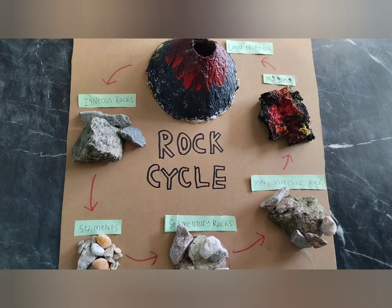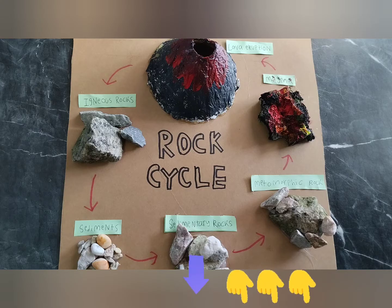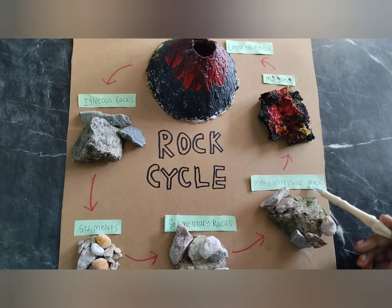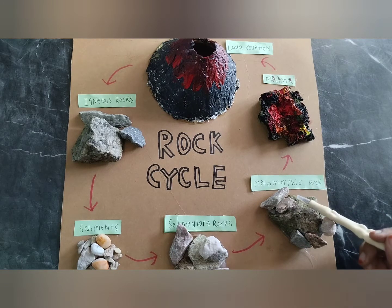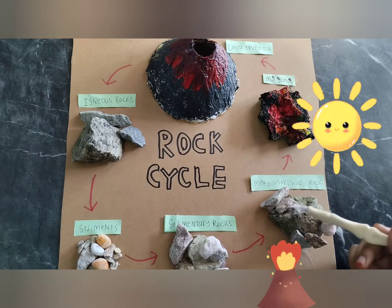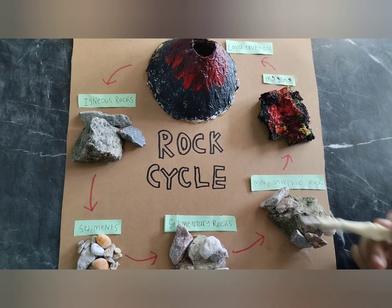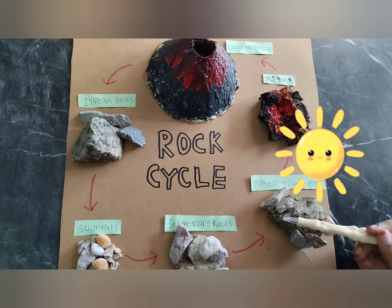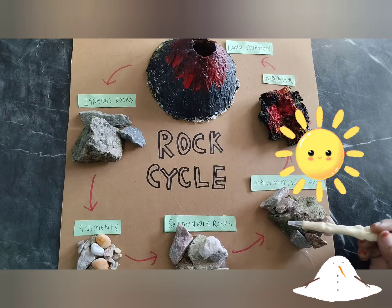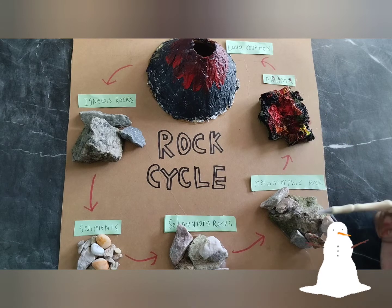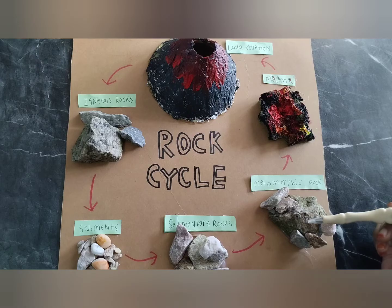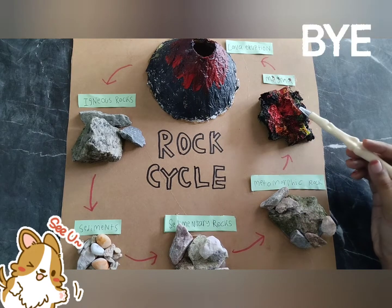Later, when sedimentary rocks or any rocks are buried deep down the earth's crust, they become metamorphic. Metamorphic rock means to change and transform by heat and pressure. Any type of rock can become metamorphic when transformed by extreme heat and pressure. They form deep within the earth's crust. If the newly formed metamorphic rock continues to experience a lot of heat, it can eventually melt and become magma. Then the magma in the volcano erupts again and forms igneous rock, and this cycle will always continue. It's a never-ending story.